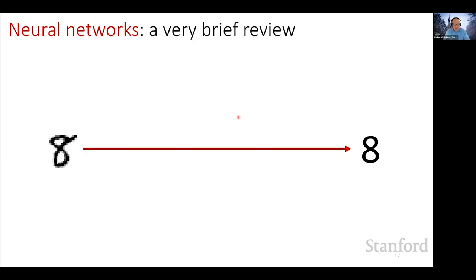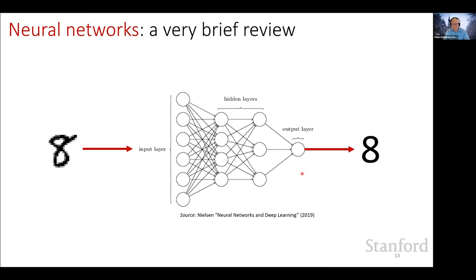Just to set the nomenclature: a neural network doing handwritten digit inference goes from an input image to a prediction, depicted as a multilayer perceptron with multiple layers of circles representing neurons. Information propagates through matrix-vector multiplications, where a vector represents each layer and a matrix-vector multiplication propagates information from one layer to the next, followed by element-wise non-linearity at each neuron.